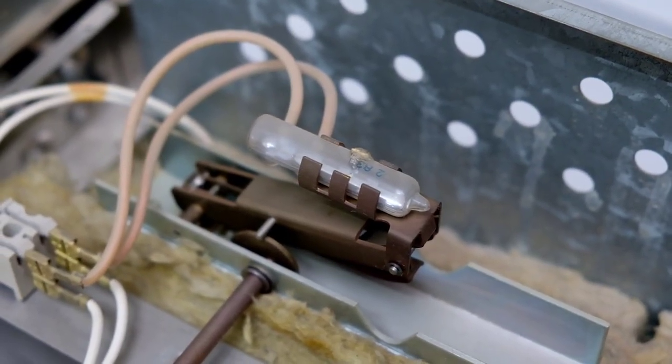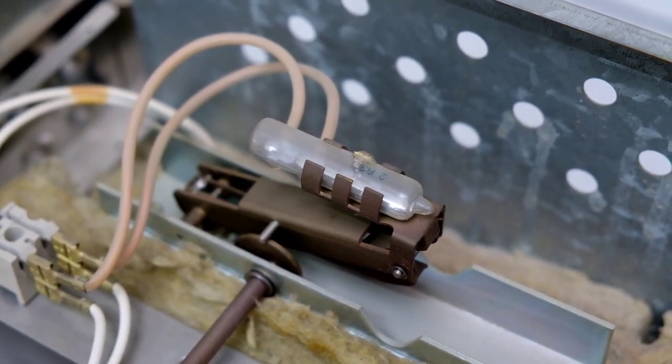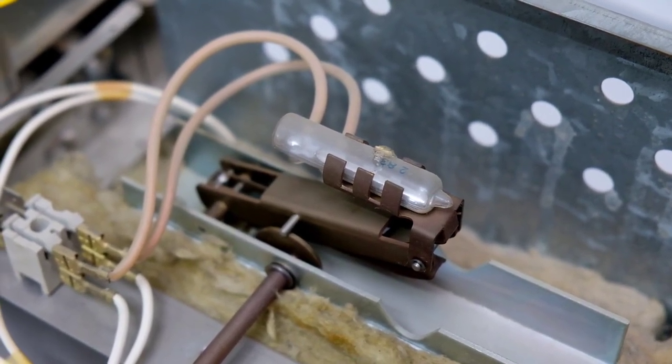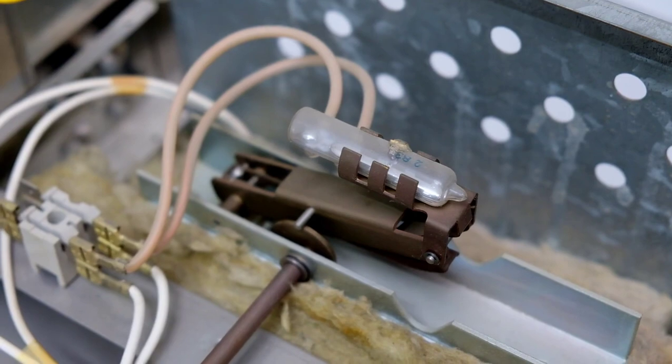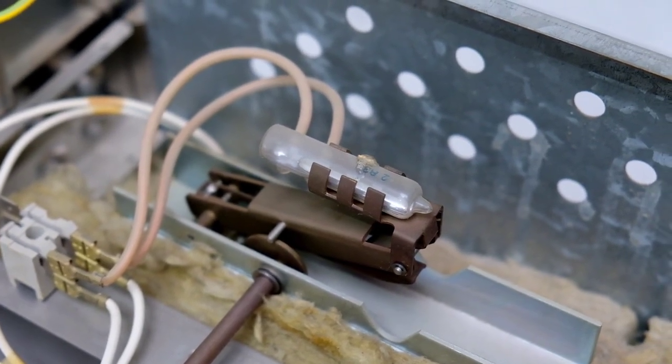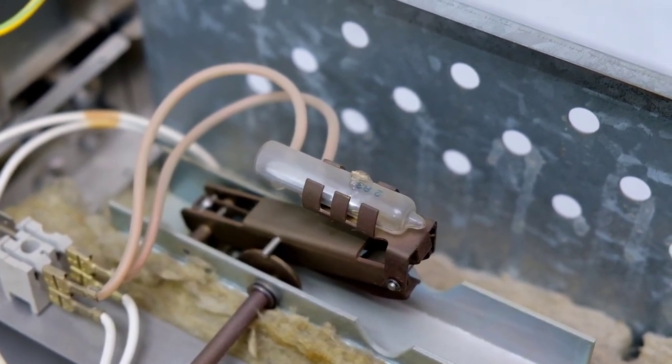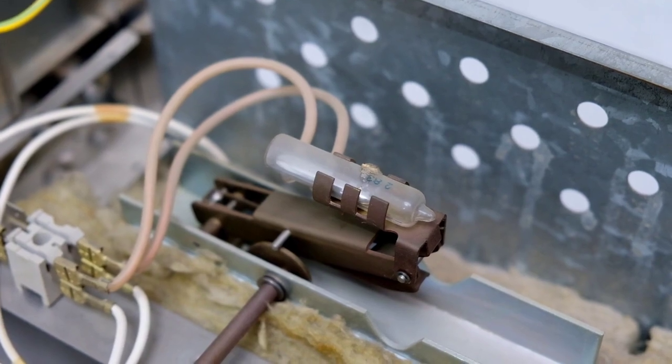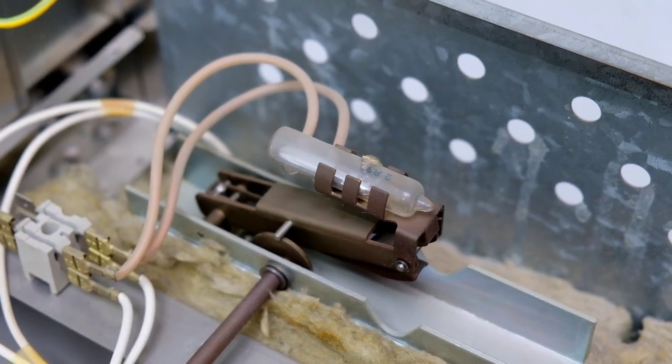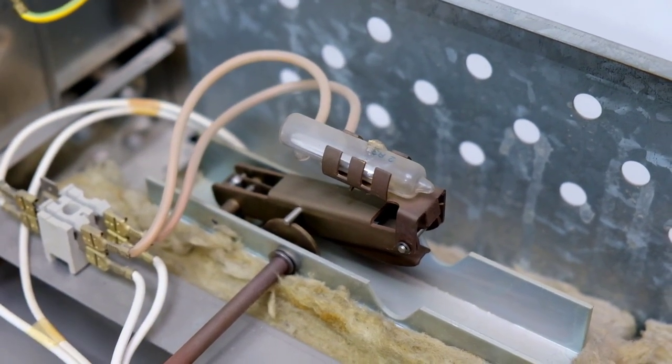One of the biggest advantages of this system is the fact that it can switch high amounts of current without deteriorating the contacts, like in a relay, where the contacts can pit and will be damaged after a lot of cycles. Here, the mercury is not affected at all. So this oven, this thermostat will practically work forever.